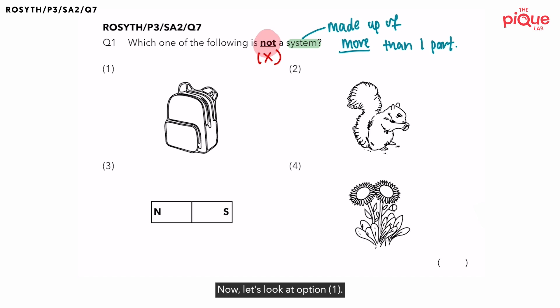Now let's look at option 1. Option 1, we have a bag. So can you quickly tell me what is the bag made up of? First, bag is made up of fabric. Anymore? Bag is actually also made up of zippers.